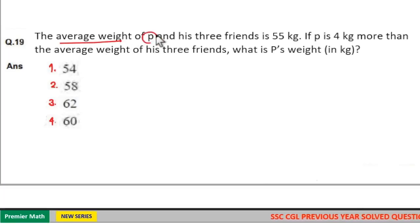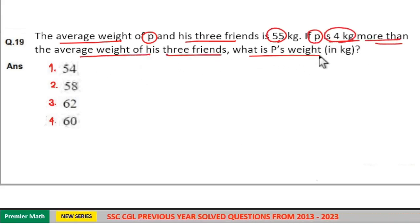The average weight of P and his 3 friends is 55 kilograms. If P is 4 kilograms more than the average weight of his 3 friends, what is P's weight?